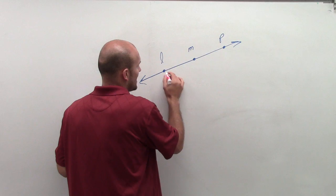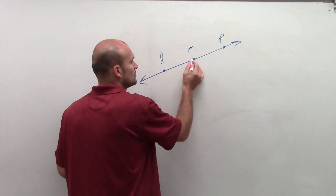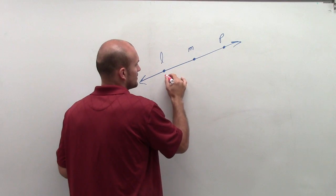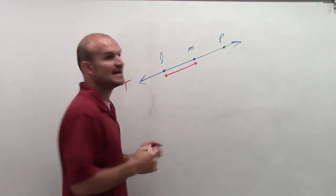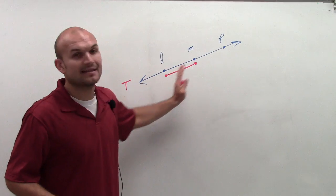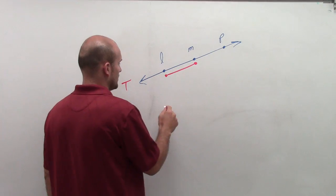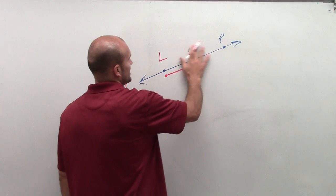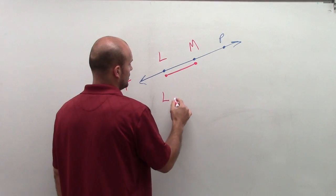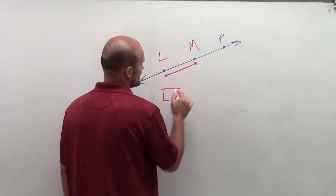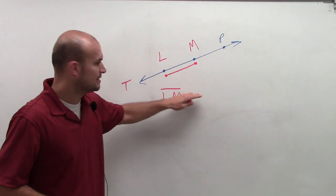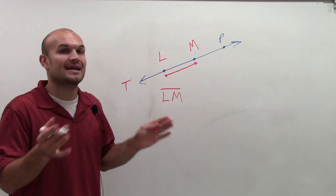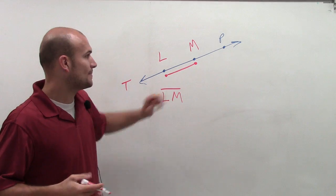If I took the path between L and M, I would have a segment, as this path is not going to go any farther than L and M. Let's use uppercase here. So LM is a segment, and I'm just going to draw a line on top that's not going to have arrows to represent a segment.